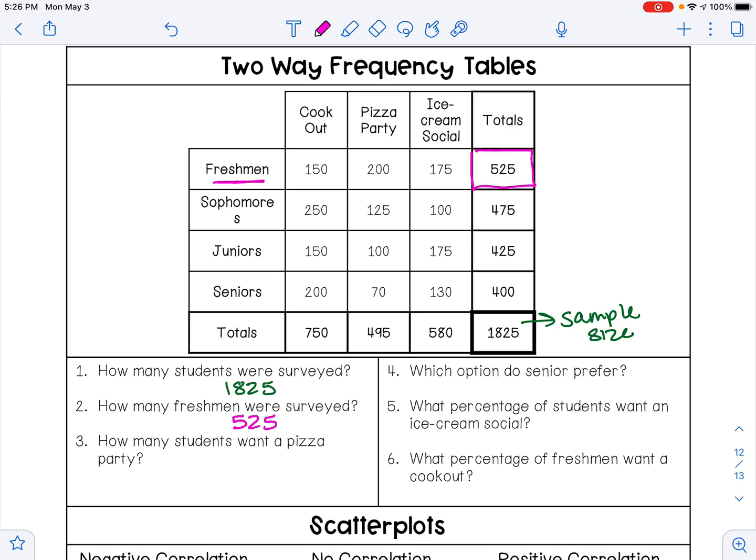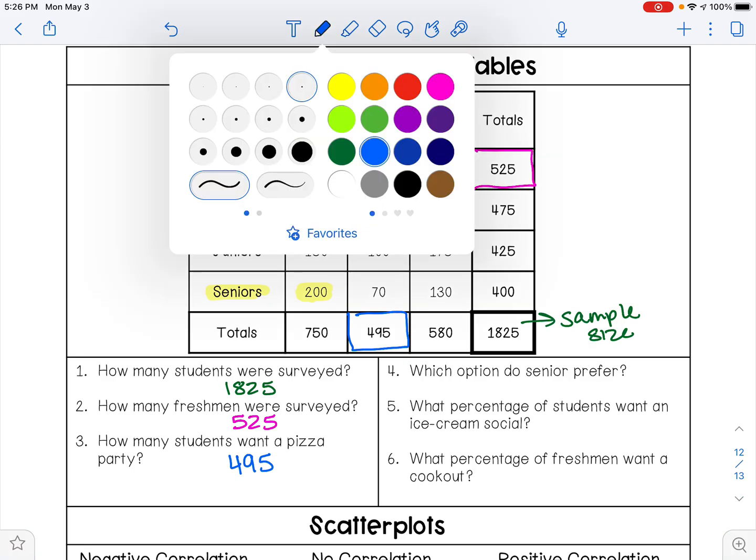How many students want a pizza party? So I'm going to go to the pizza party, I'm going to go to that total and see that that is 495. Which option do seniors prefer? So I'm going to go to seniors and I'm going to see which one has the most amount of votes, and that's 200, which is cookout. So seniors prefer a cookout.